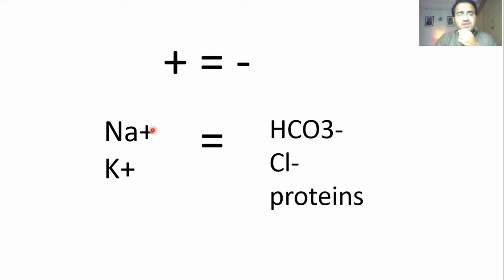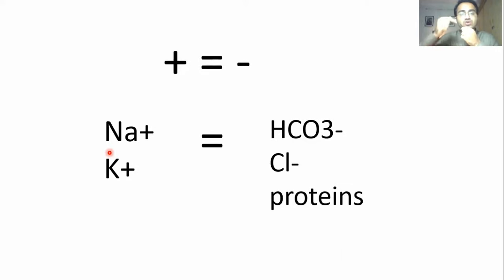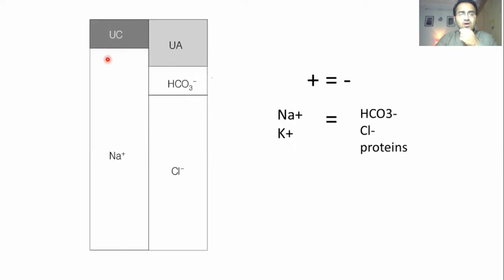If there is any change on either side — let's say any change on the positive side, if there is any reduction of positive charge — the body tries to compensate for those losses. The body tries to produce more positive charge and reabsorbs more positively charged ions to bring the charge back to a neutral position.